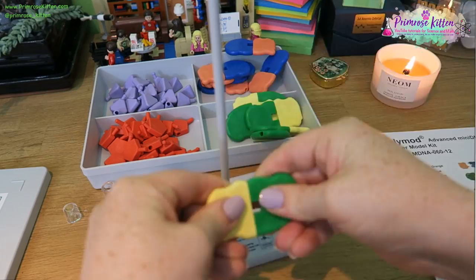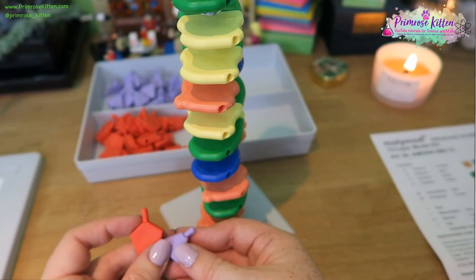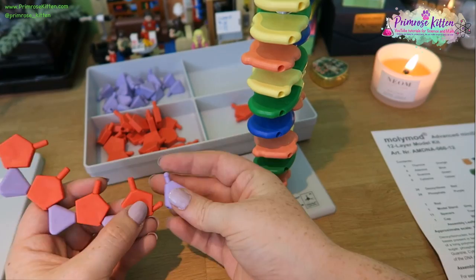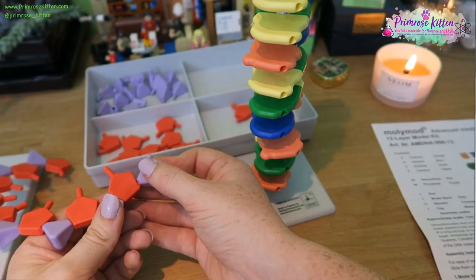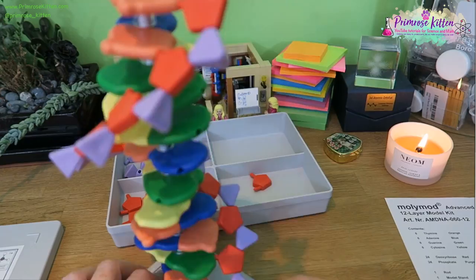This is to do with the number of connections they can make. So you're always going to get A bonding with T and C bonding with G. It has a sugar phosphate backbone. And there are two of those that go up the side around the DNA. Two strands that can break apart down the middle when the DNA wants to replicate.